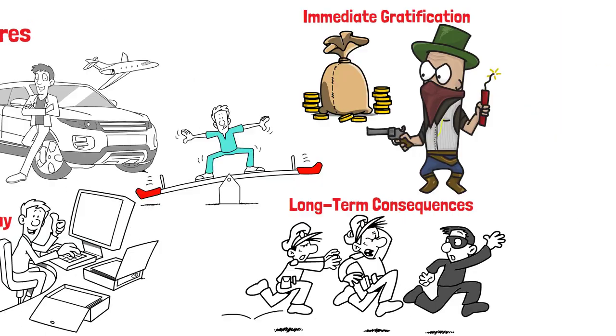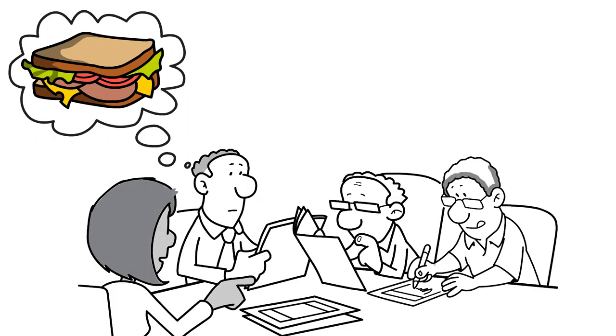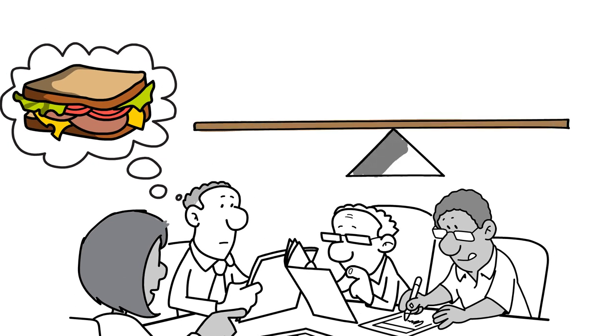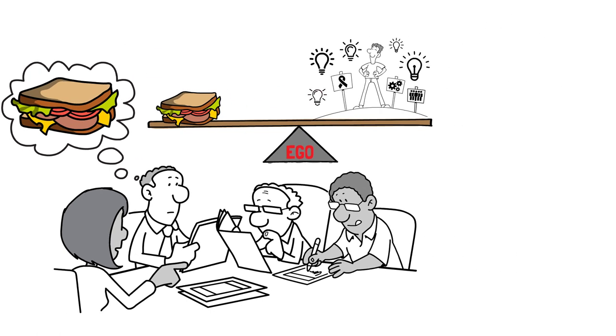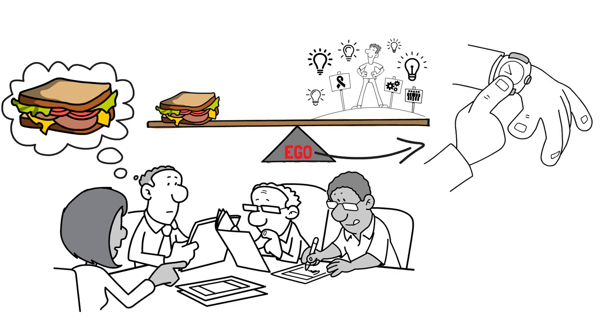Consider a scenario where you're feeling hungry but are in the middle of an important meeting. The ego steps in, assessing the situation and weighing your desire for food against the need to maintain professionalism and adhere to social norms. It might guide you to wait patiently until the meeting ends, at which point you can satisfy your hunger without disrupting the proceedings.